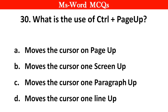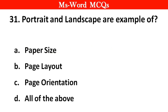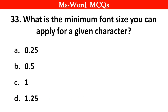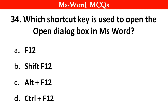Next question: What is the use of Ctrl + Page Up? Right answer is option A, move the cursor one page up. Next question: Portraits and landscapes are examples of — right answer is option C, page orientations. Next question: How can you break the current column? Right answer is option D, press Ctrl + Shift + Enter. Next question: What is the minimum font size you can apply for a given character? Right answer is option C, 1. Next question: Which shortcut key is used to open the Open dialog box in MS Word? Right answer is option D, Ctrl + F12.